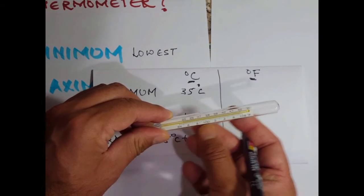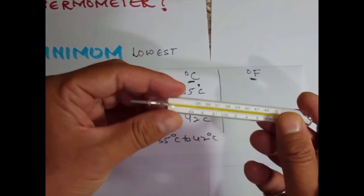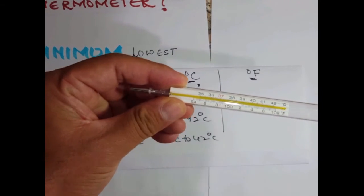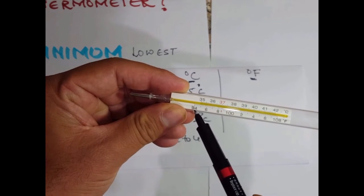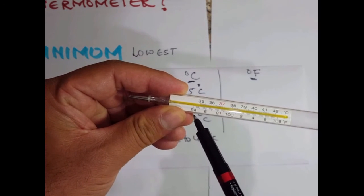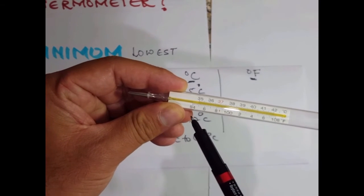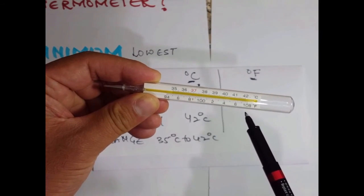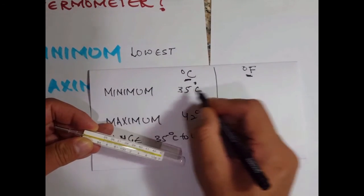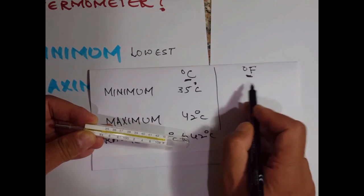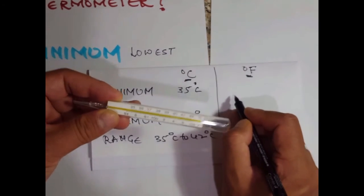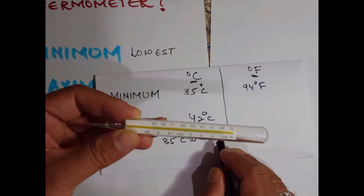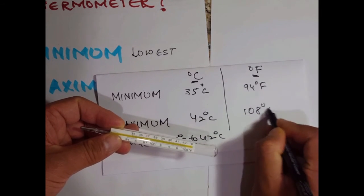So what is the range of this thermometer on the Fahrenheit scale? You can see that this thermometer starts at around 94 degrees — that is the lowest temperature it can measure in Fahrenheit. And the highest temperature it can measure in Fahrenheit is 108 degrees Fahrenheit. So the minimum value in Fahrenheit is 94 degrees Fahrenheit and the maximum value is 108 degrees Fahrenheit.